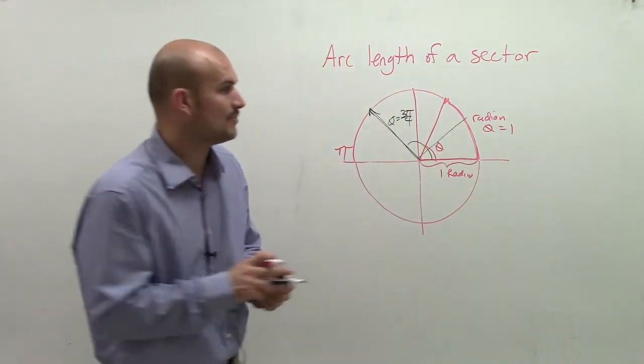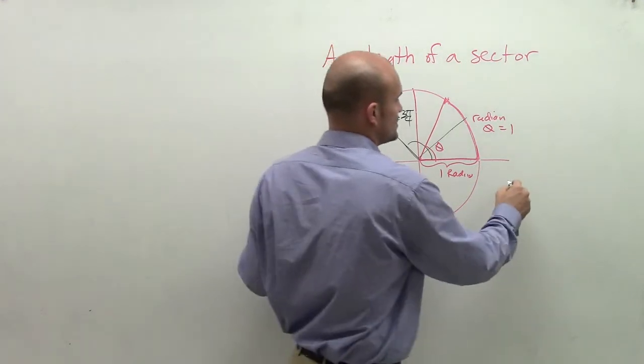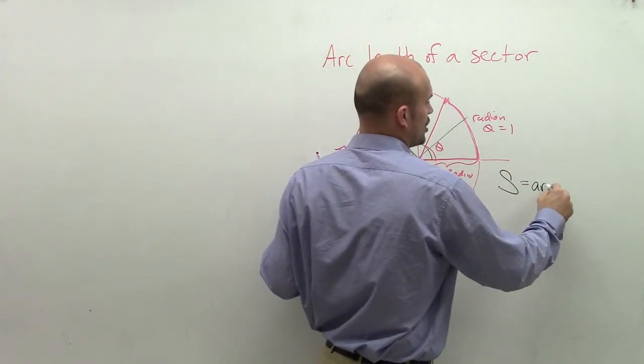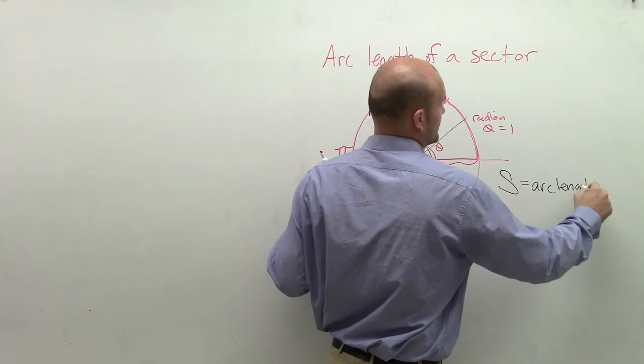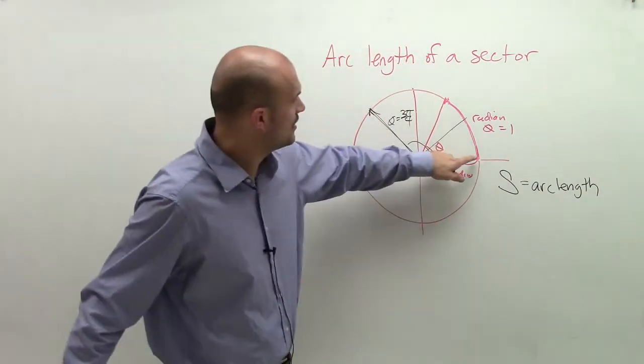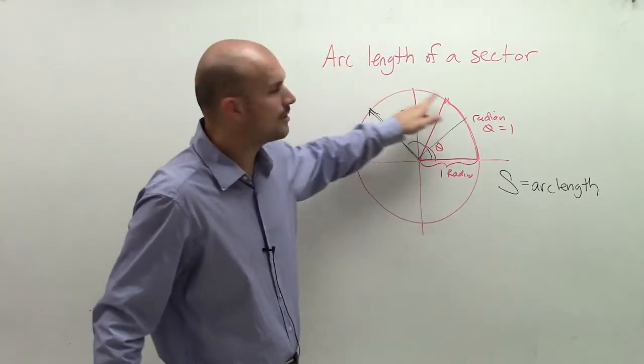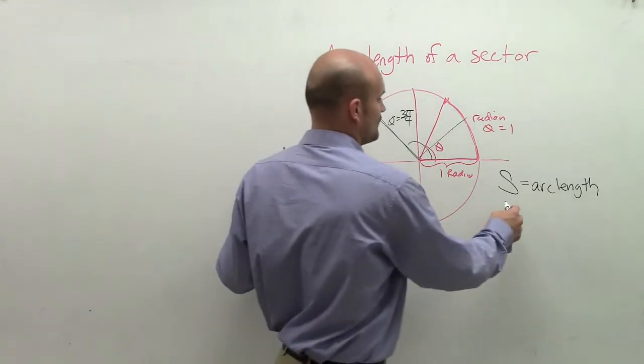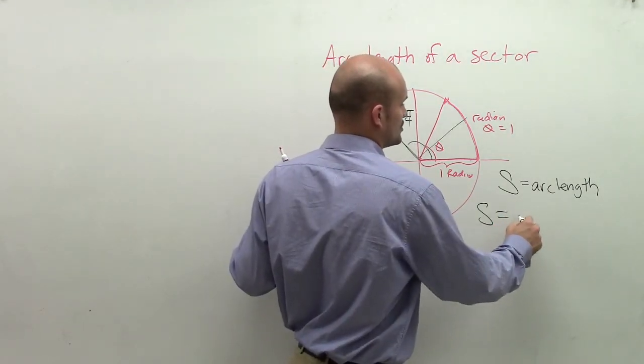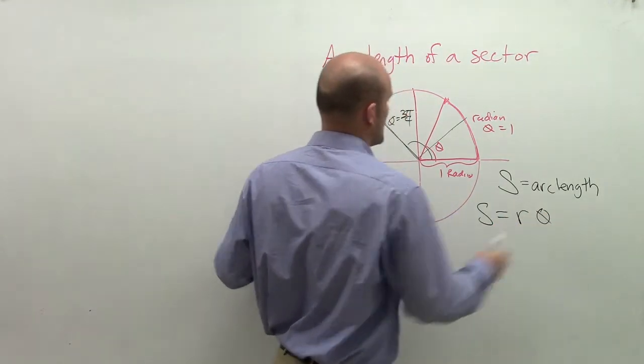So what that did is bring us up to an equation, which is s, which represents our arc length. And our arc length is the distance of our arc. That's equal to, so s is equal to your radius times theta.